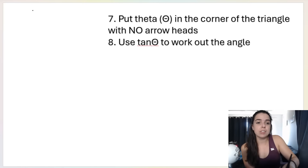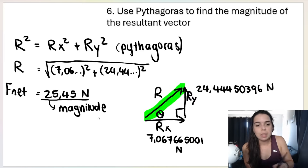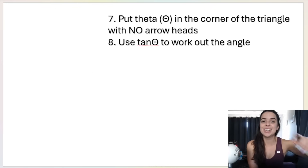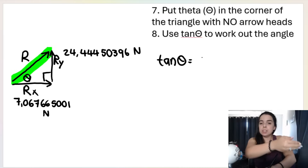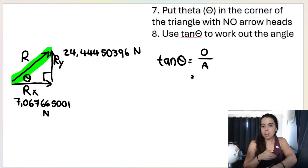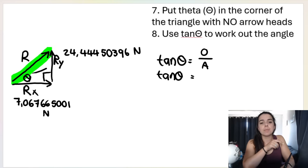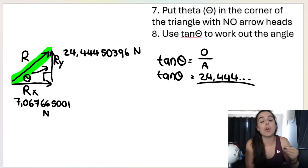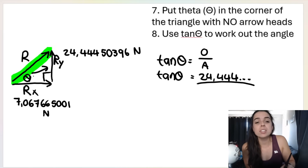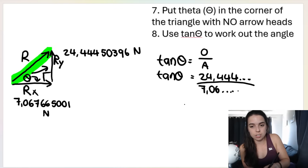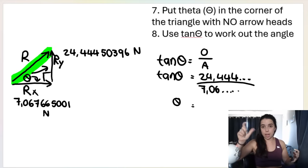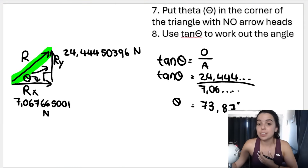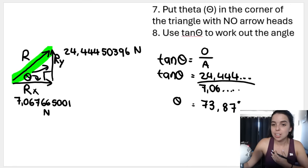Now for the direction — step seven — put theta in the corner of the triangle and use tan theta to work out the angle. Tan theta equals opposite over adjacent. R-y is opposite theta, and R-x is adjacent to theta. So tan θ = 24.44... / 7.06.... Use shift-tan on your calculator, type in the fraction, and I get 73.87 degrees. But that is not my final answer — I can't just say the vector is acting at 73.87 degrees without specifying a direction.